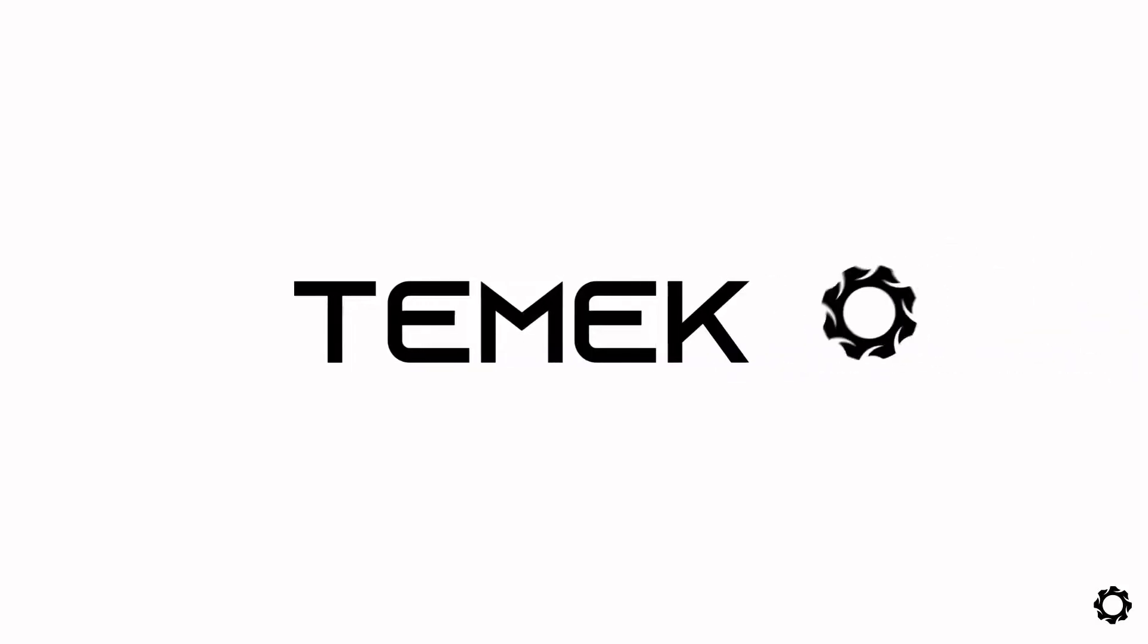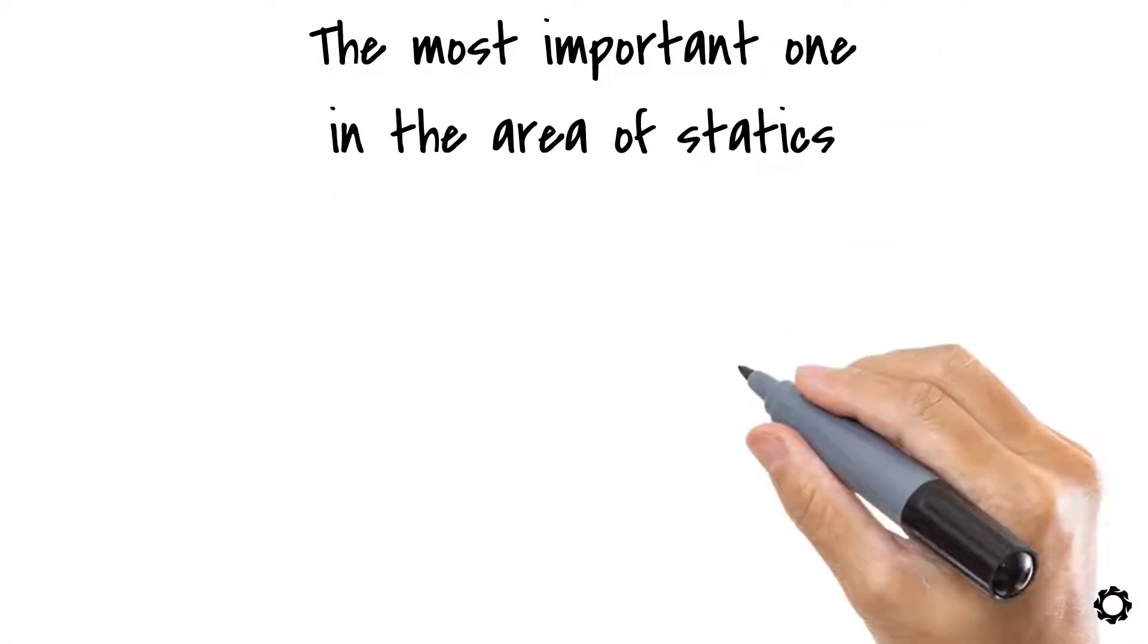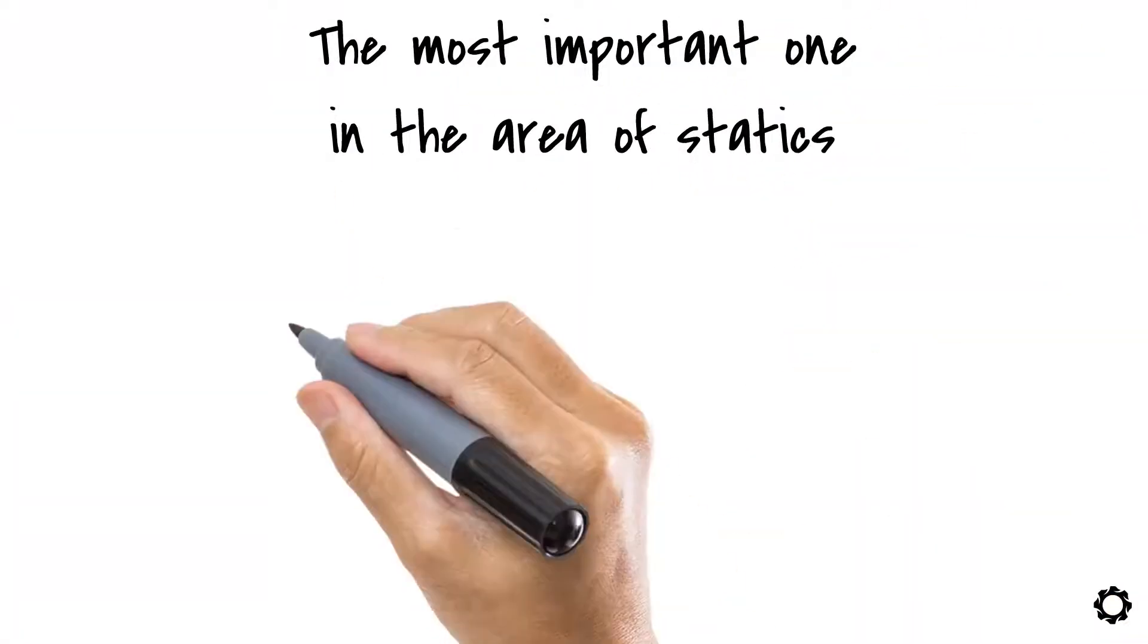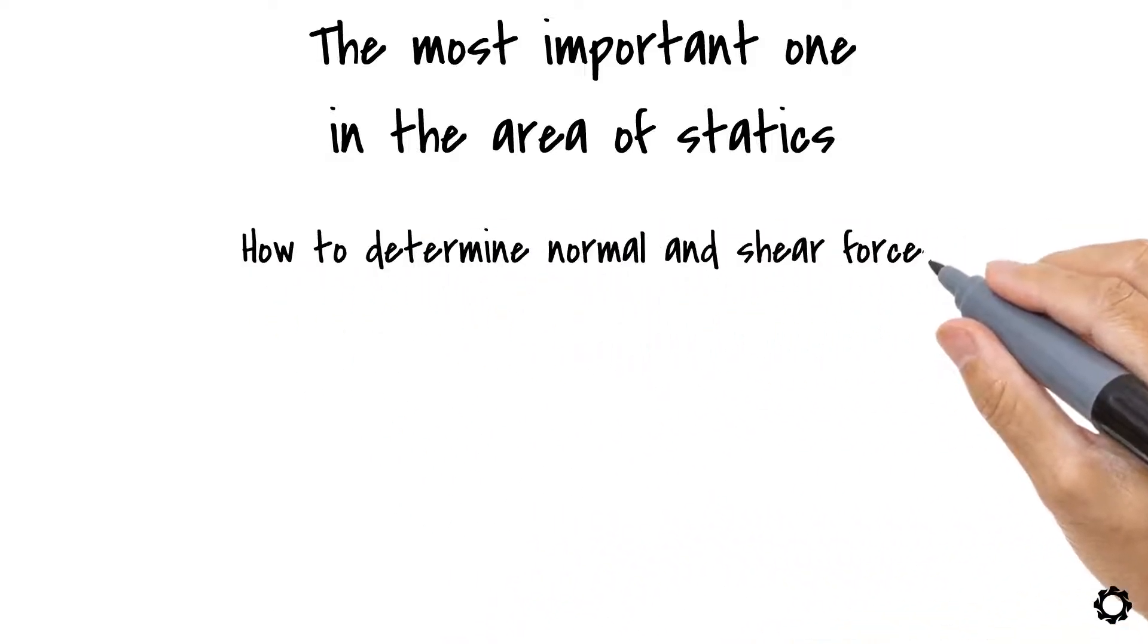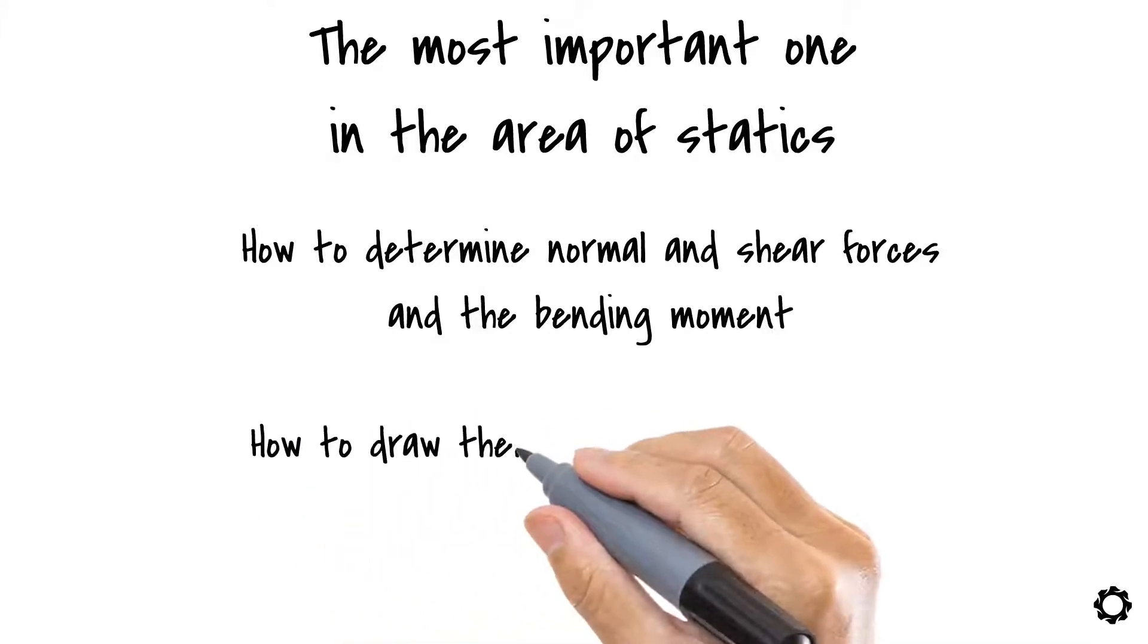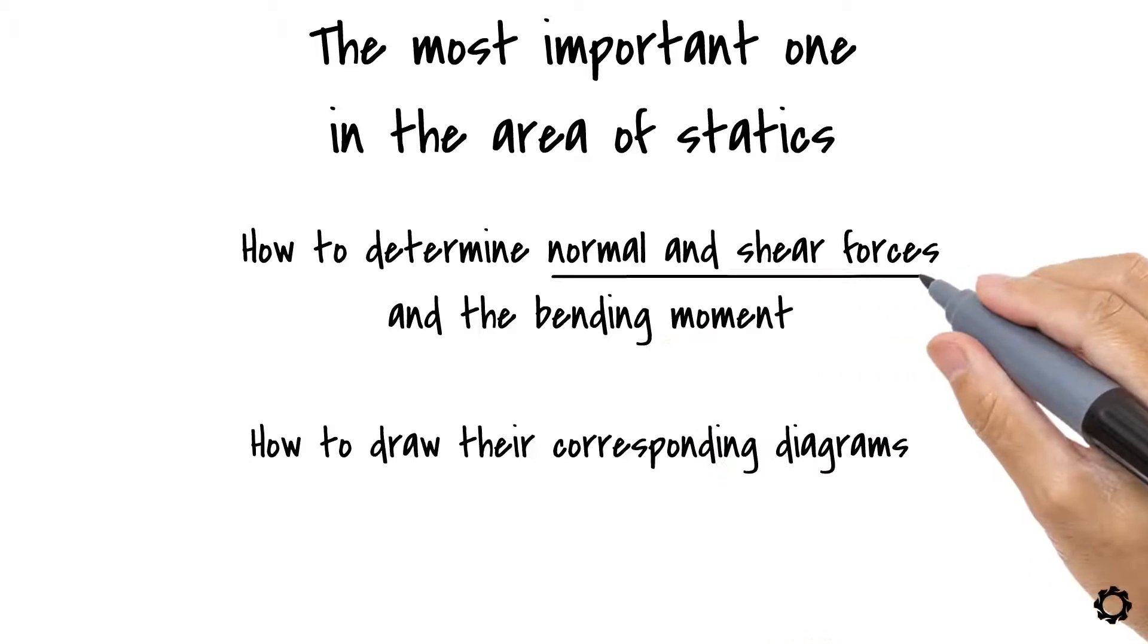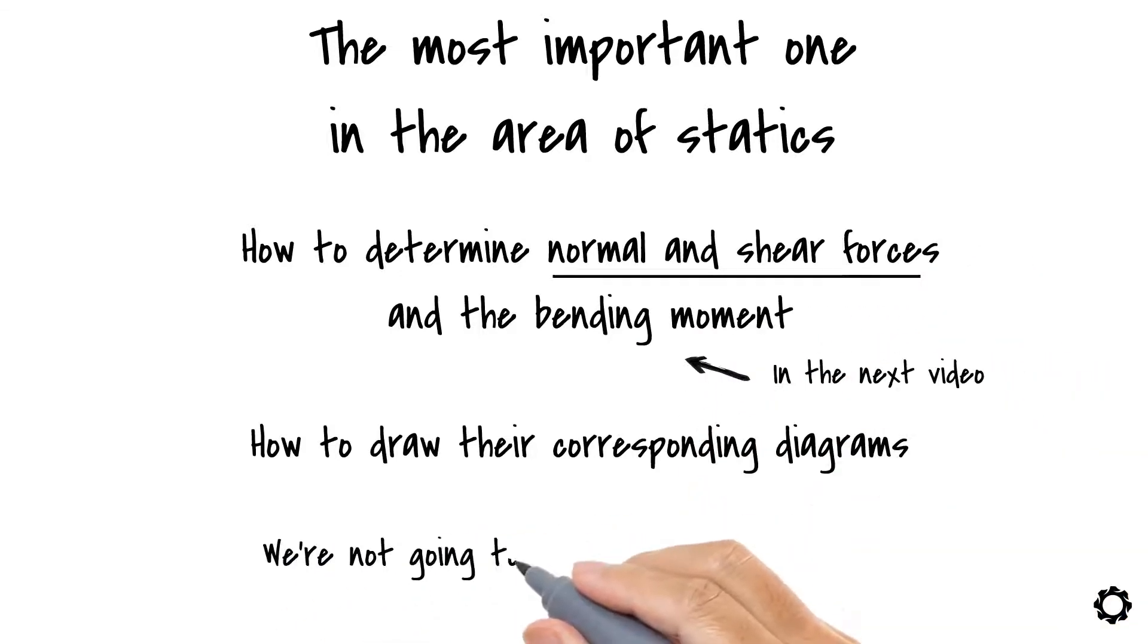Hi and welcome to Temeko. In this video, we start on the topic which is perhaps the most important one in the area of statics. This topic is how to determine the normal and shear forces and the bending moment on either side of the specified structure's section and how to draw their corresponding diagrams. We'll start with normal and shear forces and then in the next video we'll concentrate on the bending moment. We are not going to cover torsion in this course but we will leave it for a further course such as strength of materials. Sounds good? Let's get started then.